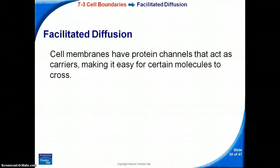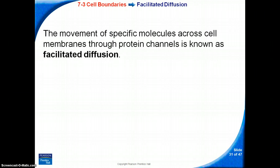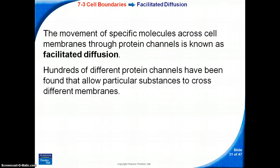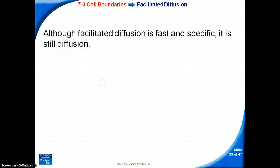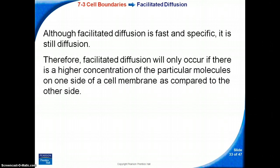Facilitated diffusion: cell membranes have protein channels that act as carriers, making it easy for certain molecules to cross. The movement of specific molecules across cell membranes through protein channels is known as facilitated diffusion. Hundreds of different protein channels have been found that allow particular substances to cross different membranes. Although facilitated diffusion is fast and specific, it is still diffusion; therefore, it will only occur if there is a higher concentration of the particular molecules on one side of a cell membrane compared to the other side.